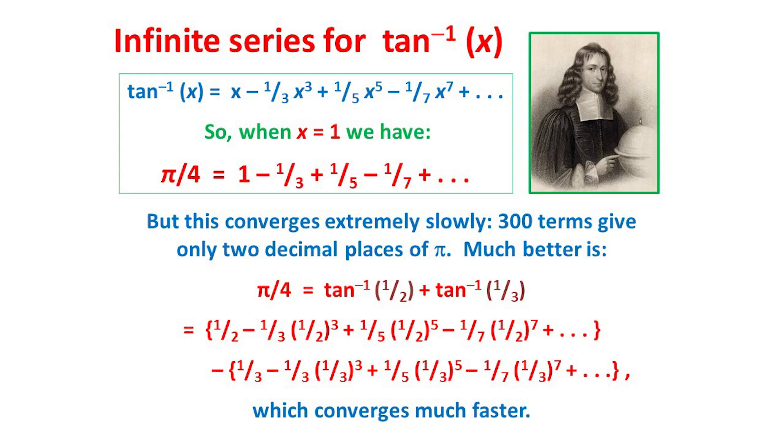Many mathematical functions can be written as infinite series. For example, we can write tan⁻¹ of x as the infinite series shown here, with only odd powers of x appearing, and with odd numbers as denominators. This series had already been known in 15th century India, but is now often named after the Scotsman James Gregory shown here, who rediscovered it 300 years later.